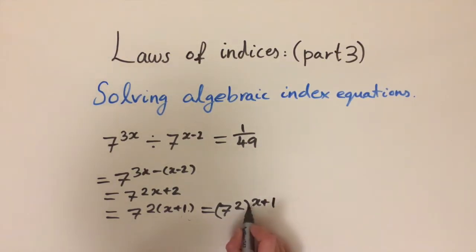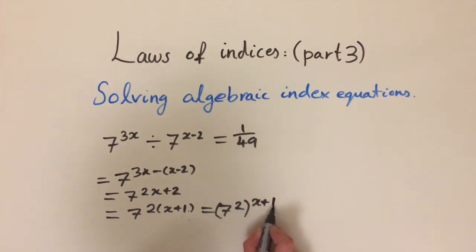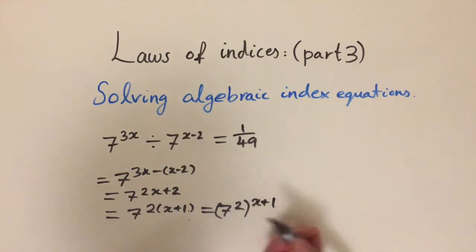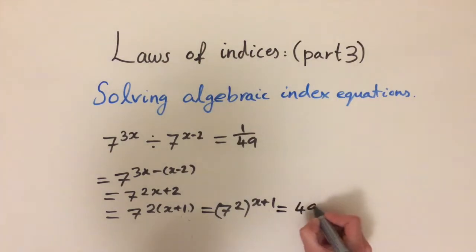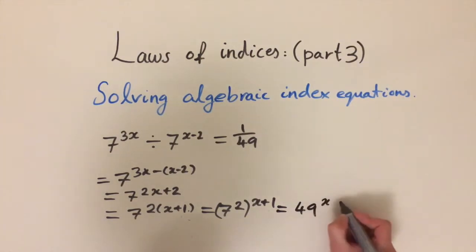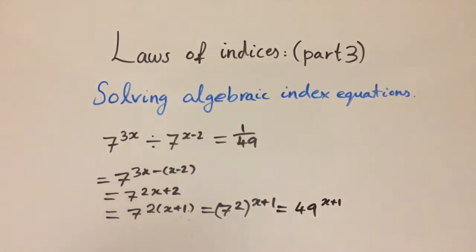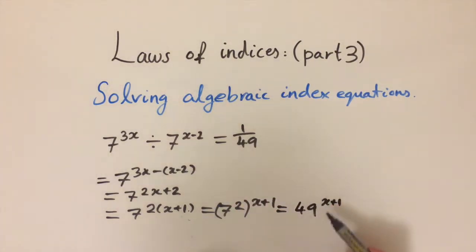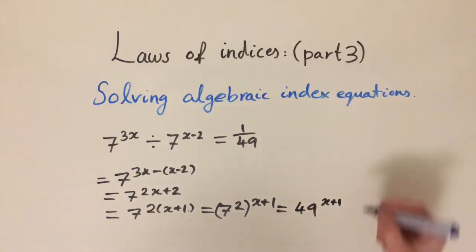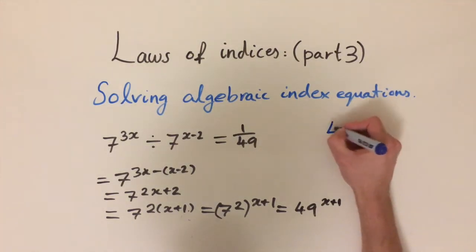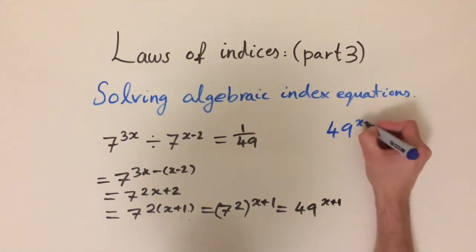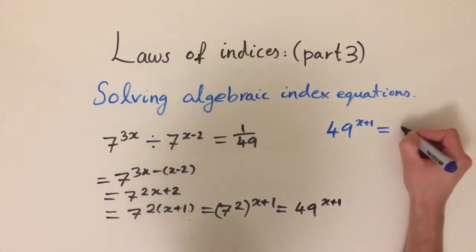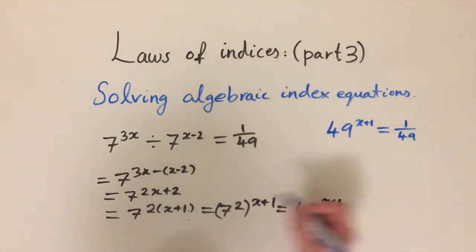We can check by multiplying out the indices: 2 times (x plus 1) gives 2x plus 2, which confirms this is right. Since 7 squared equals 49, we have 49 raised to the power of x plus 1. Now we've got 49 on both sides of the equation: the left-hand side is 49 to the (x plus 1), and the right-hand side is 1 over 49.